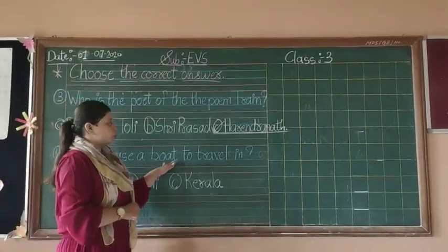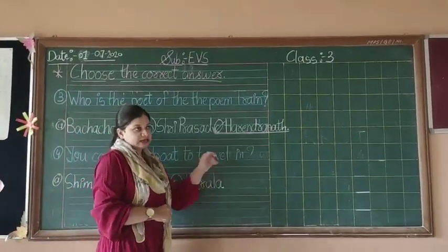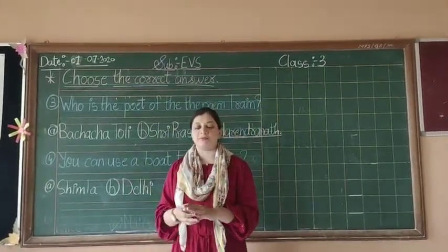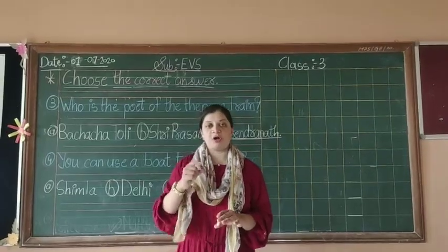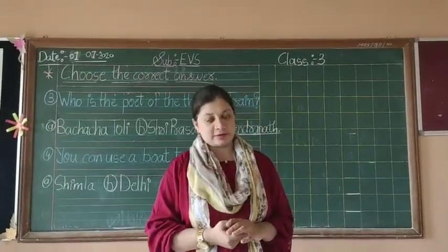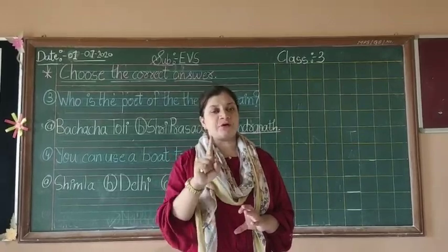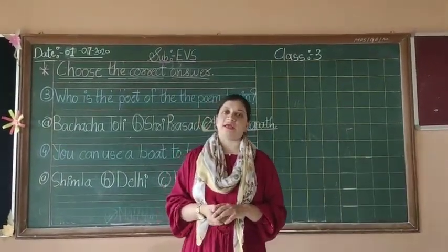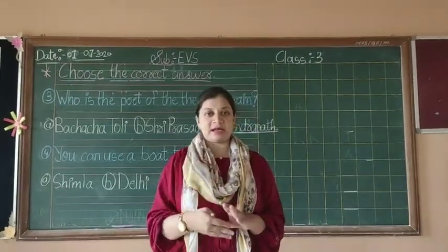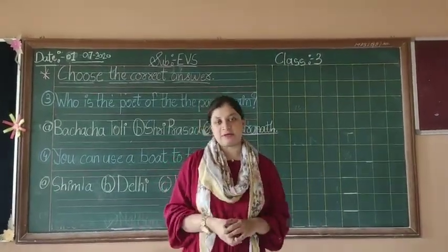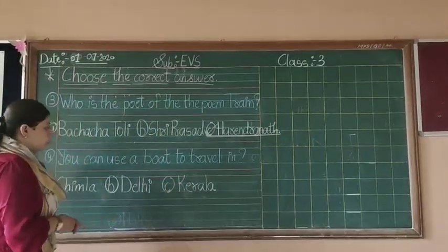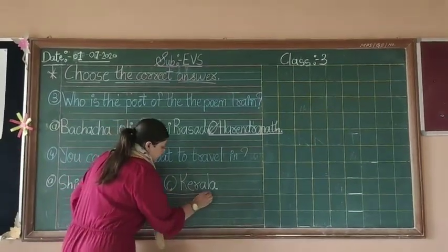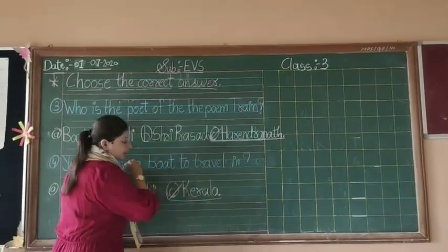Number four: What did the poet use to travel? In the chapter, the children went to different places for vacation. One girl went to her nani's house in Kerala, and she travelled there. They used a bus, a train, a taxi, and they also used a boat in Kerala. So the correct answer is Kerala.